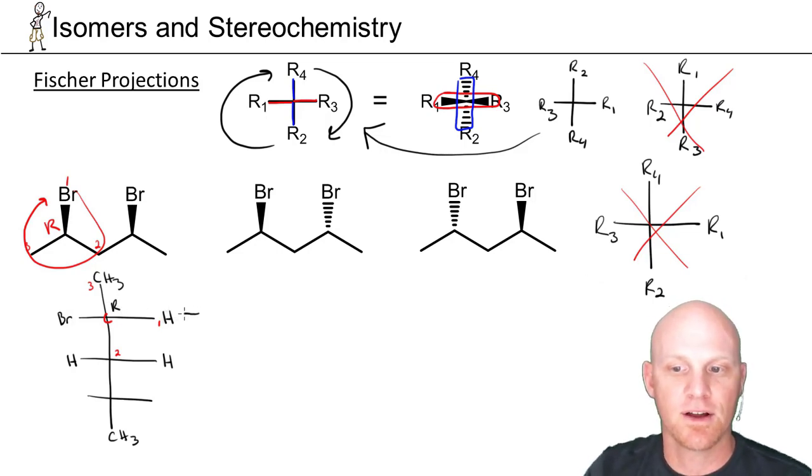And now this would also be in the R configuration. The hydrogen here is on the wedged position, being on the horizontal, and so it looks like now that it's going to be S, but it's really R.